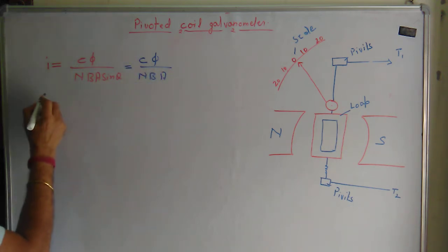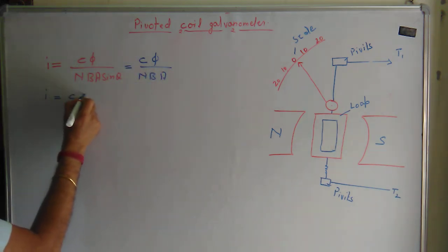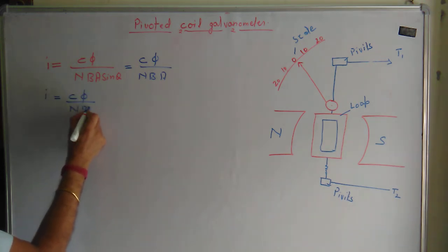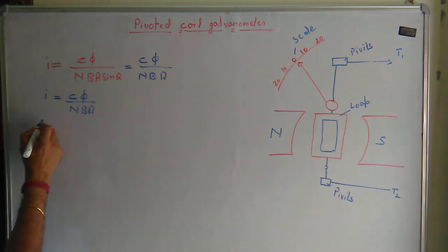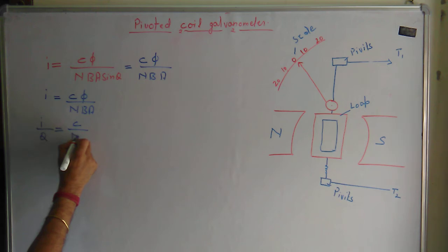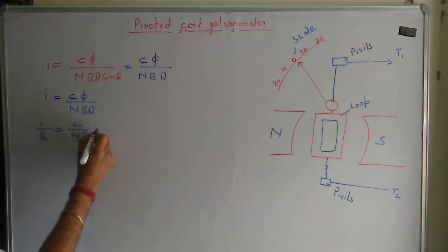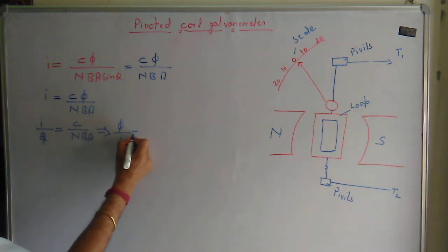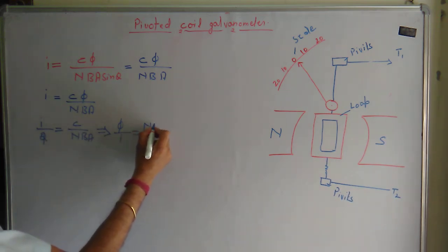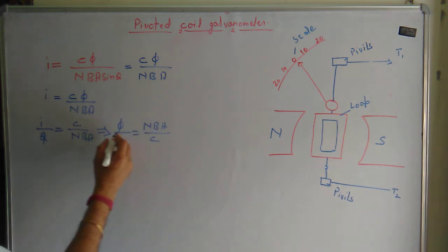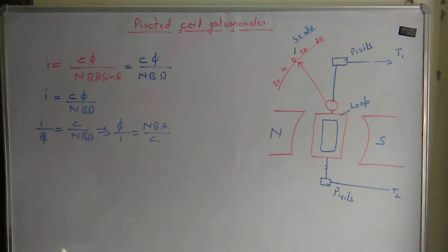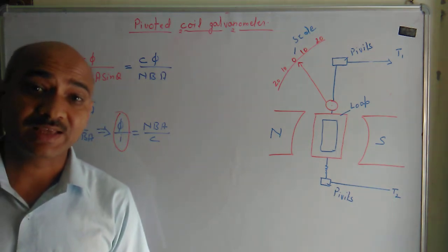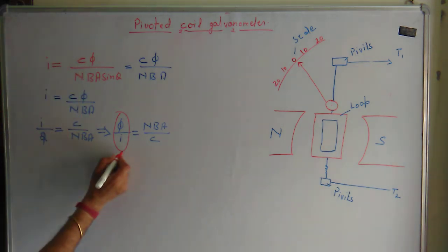From the expression i equals c·φ upon n·B·A, we can write i upon φ equals c upon n·B·A, and therefore φ upon i equals n·B·A upon c. This expression φ/i is called the current sensitivity.